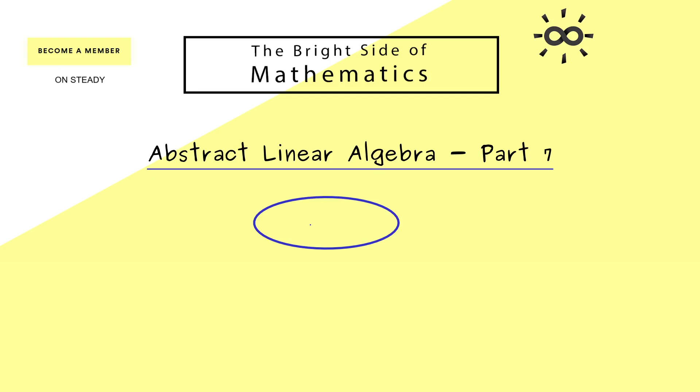Okay then let's immediately start with the topic by considering an abstract vector space V. And now we assume that this vector space has a finite dimension so we can choose a basis B with n elements. And as always we call the elements of the basis B lowercase b1, b2, and so on.